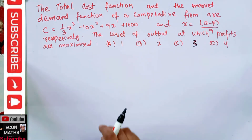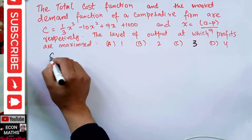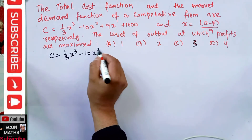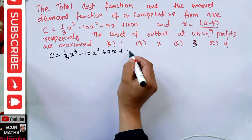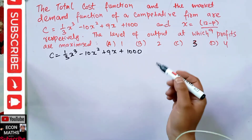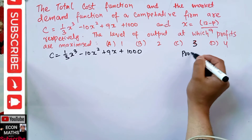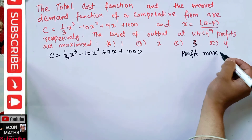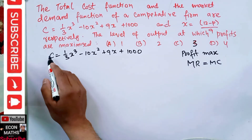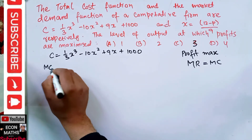We are given the total cost function C = (1/3)x³ - 10x² + 9x + 1000. The profit maximization condition is that marginal revenue should be equal to marginal cost. Since we have the total cost function, we will first calculate the marginal cost.